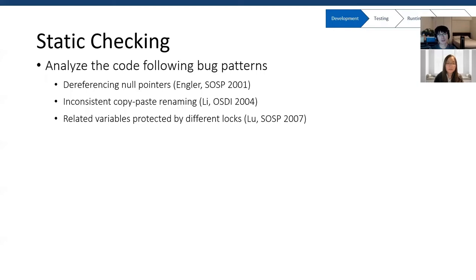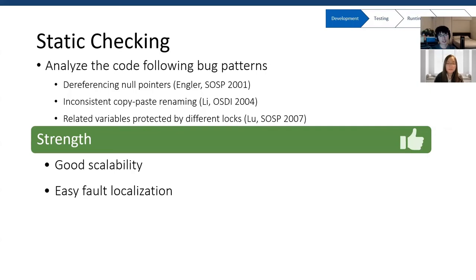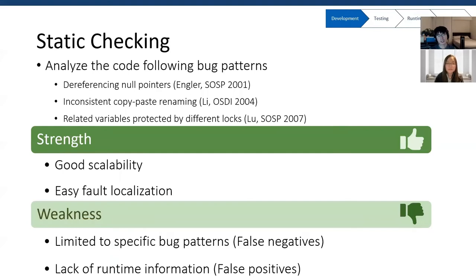Static checking is good in many ways. First, it has good scalability — normally the static checking tool only needs to do a linear scan of the code, making it suitable for very large systems. Second, locating the bug is easy: once we find it, we know exactly where it is and can tell developers. However, this technique is limited to specific bug patterns. If a bug is caused by an unknown pattern, we can't apply this technique. Also, since we don't have runtime information to confirm a finding is indeed a bug, we may have some false positives.